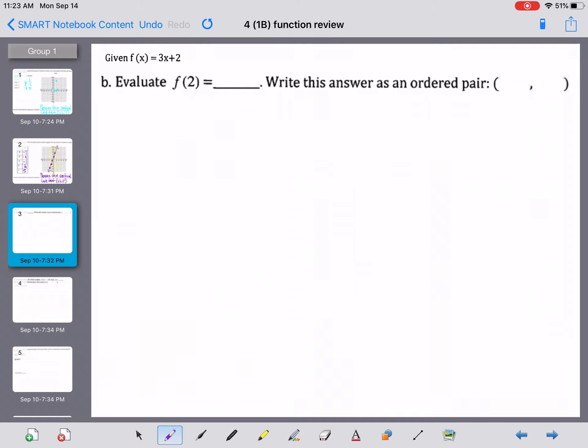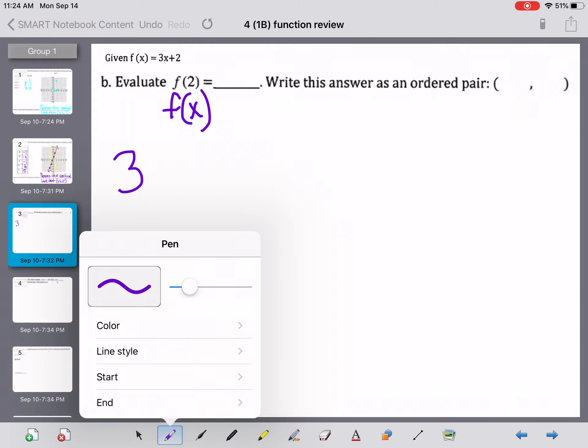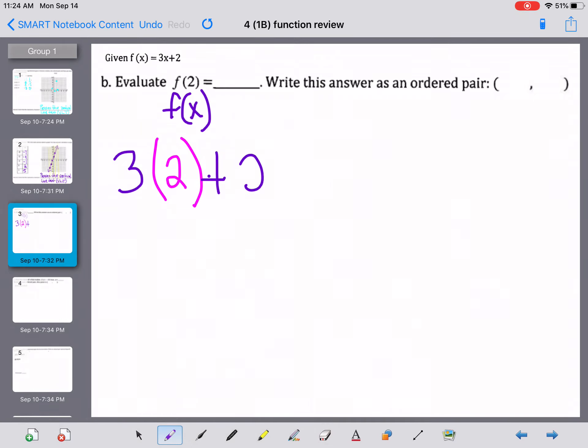But if we continue on, there's more to this problem because it's the same function, f of x equals 3x plus 2. It says evaluate f of 2. So once again, remember that f of 2, that's f of x. So that means the 2 is going to go back into this equation. I'm going to change colors here for a minute. I'm going to go back into the equation wherever we see x. So we're putting that 2 back into the equation.